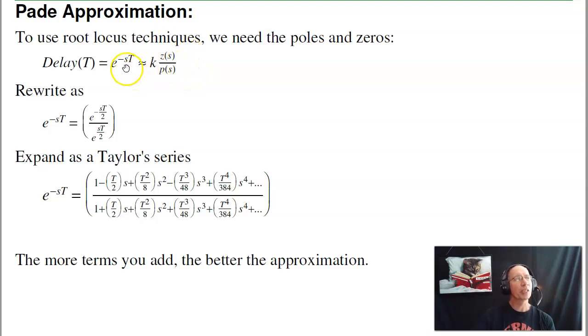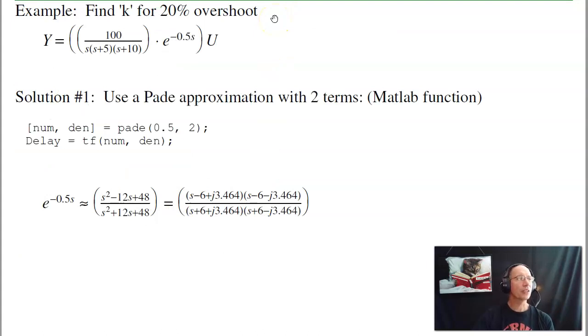So one way to do that is change the problem. Let's come up with an approximation for e to the minus st that has poles and zeros. Take e to the minus st, put half in the numerator, half in the denominator, then do a Taylor series expansion. This is a Pade approximation. The more terms you include, the more accurate it is, but the more complicated the model. That's also a function in MATLAB called pade.